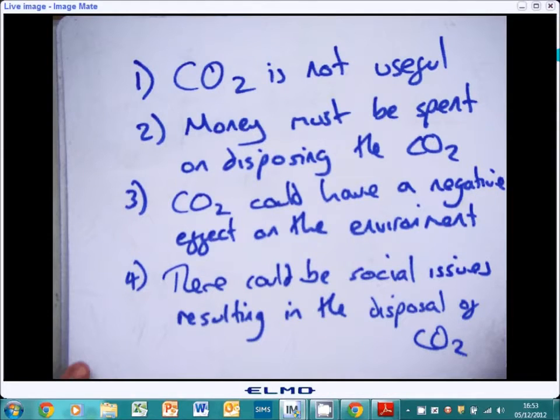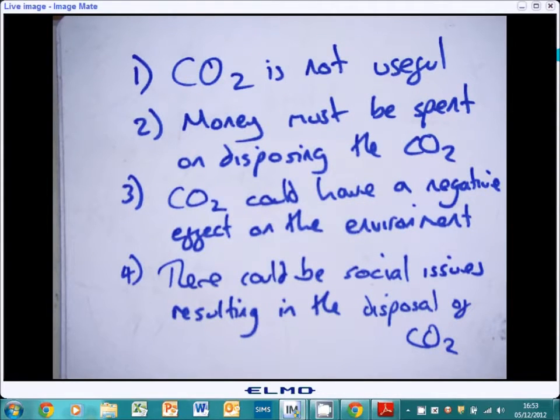Which are these. Number one, carbon dioxide isn't useful. There's nothing in this world that we use carbon dioxide for other than for plants and photosynthesis. Number two, you've got to spend money to dispose of it. If you don't want it going off into the atmosphere for global warming, you've got to be able to find a way to get rid of it, which costs money. Number three, it could have a negative effect on the environment. It's a greenhouse gas, trapped heat in the atmosphere, raising the global temperature of the earth. And then finally, there can be social issues resulting in the disposal of the CO2.